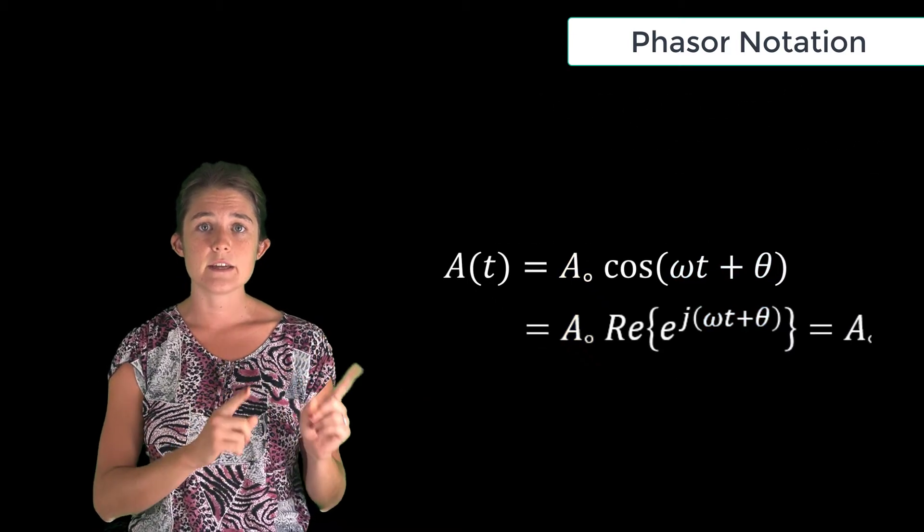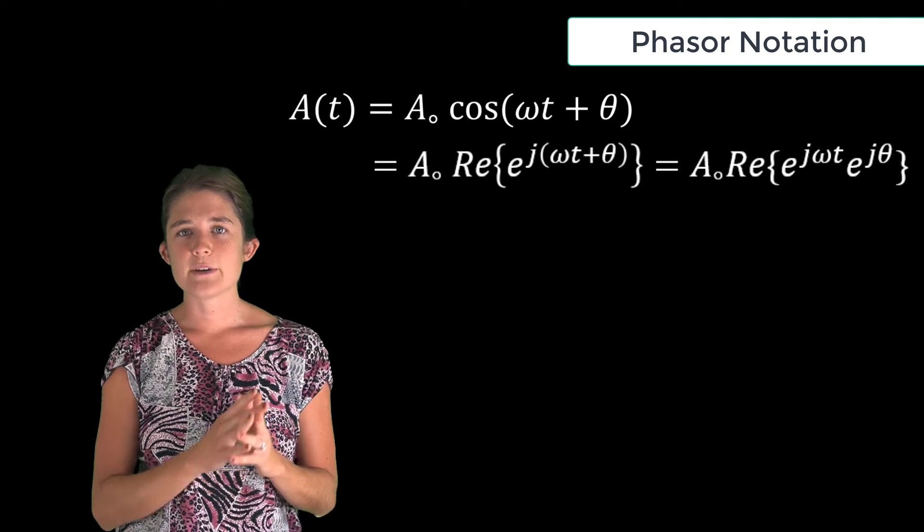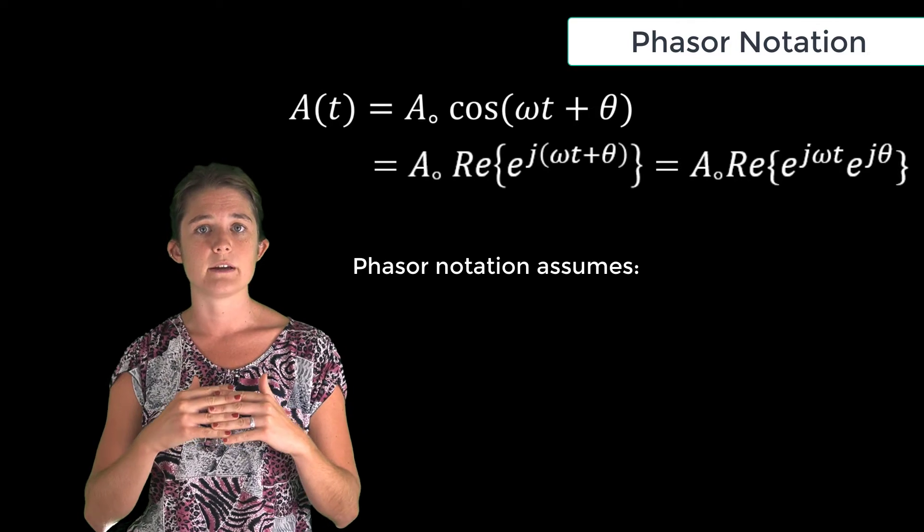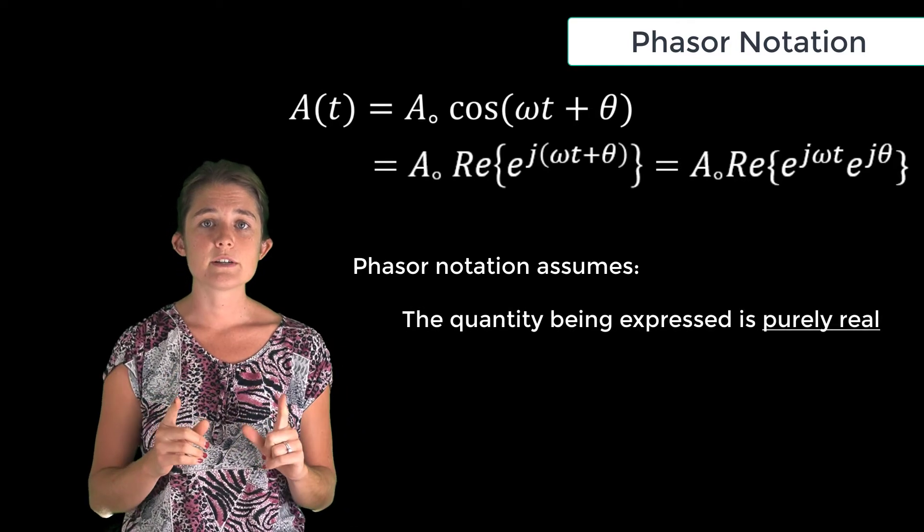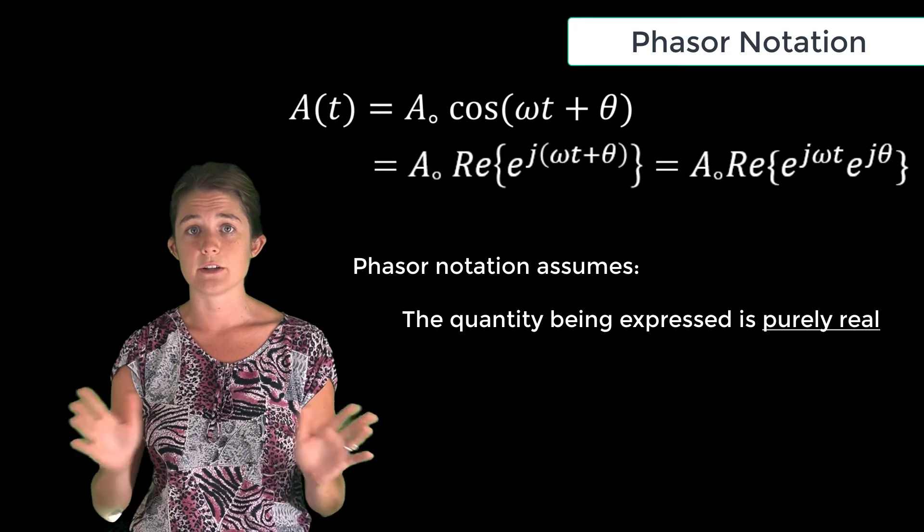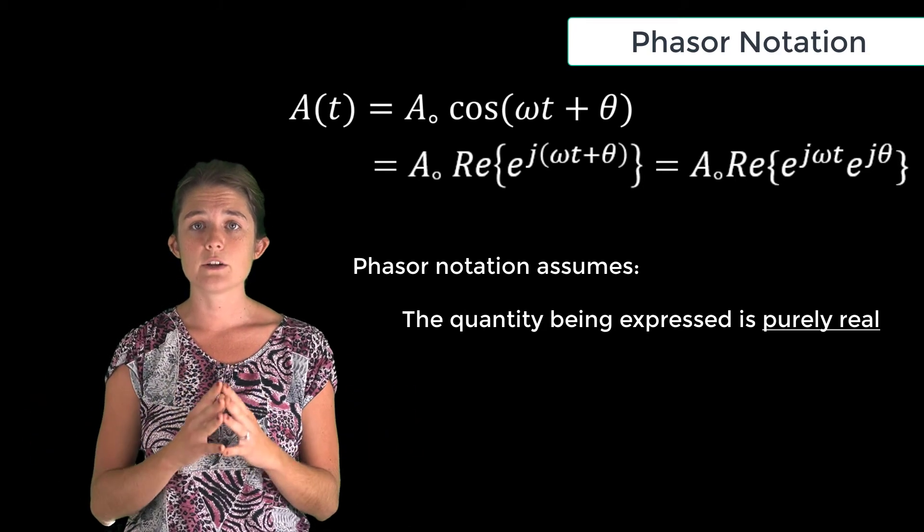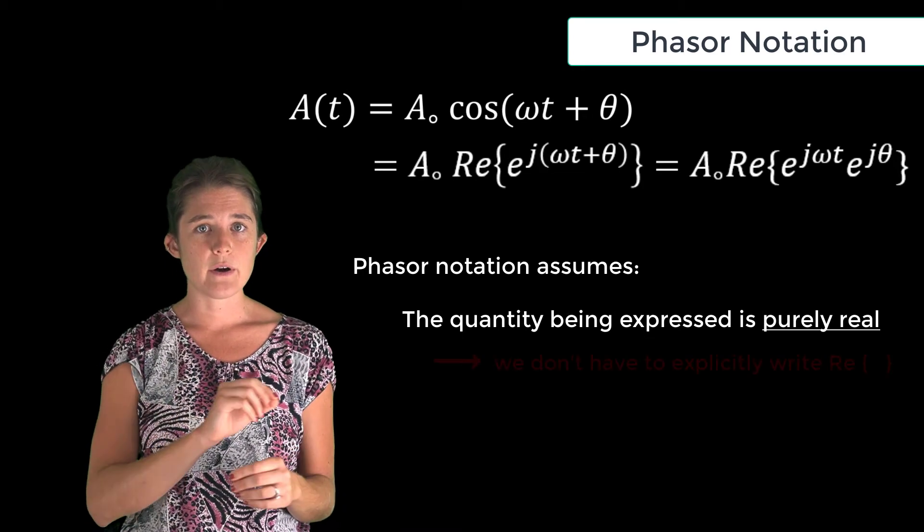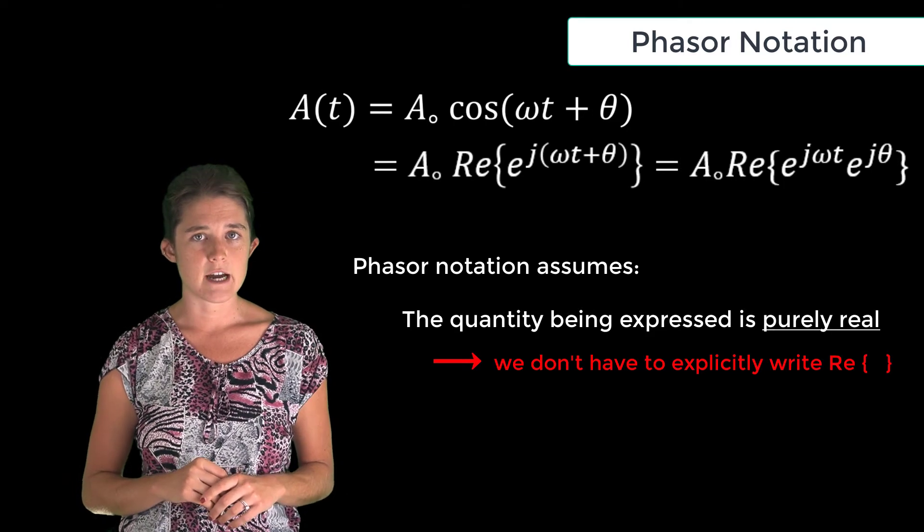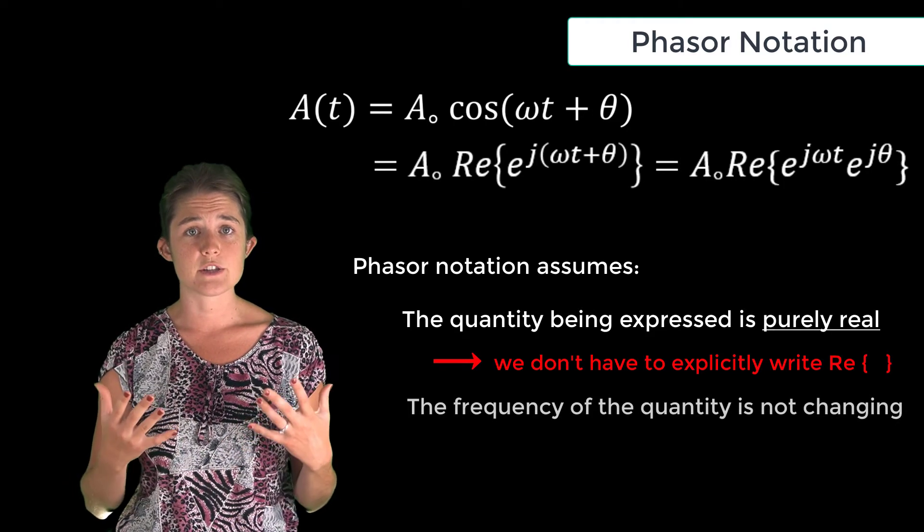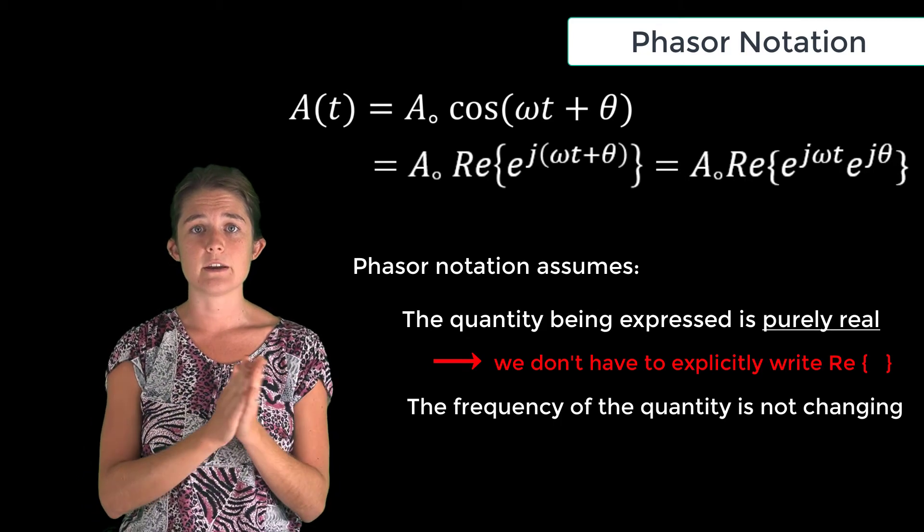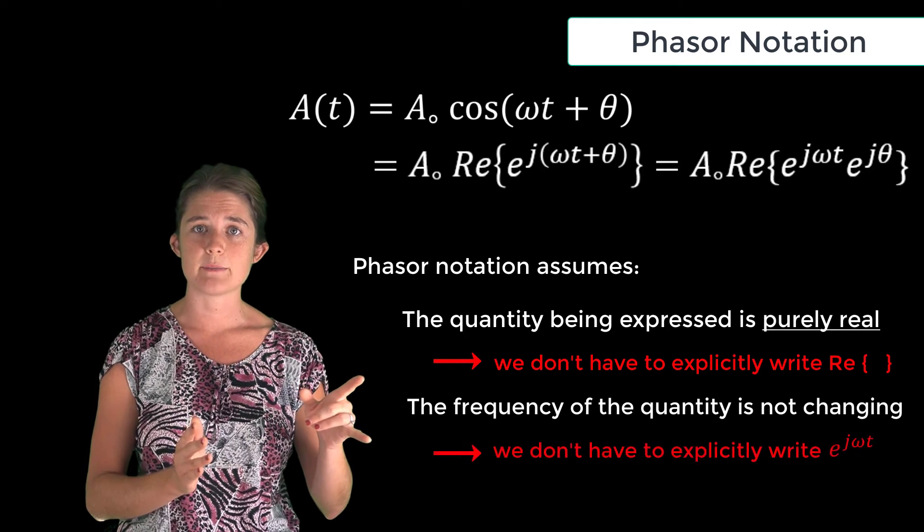Now phasor notation uses this complex notation but makes two notationally simplifying assumptions. The first is that whatever we're expressing using phasor notation, whether it's voltage or electric field or whatever it is, is a real quantity. Since we know it's real, we don't have to write this every time. The second assumption is that we're dealing with a linear time-invariant system. In other words, the frequency isn't changing. The only things that change in an LTI system are amplitude and phase, so we can break off the frequency part of this term and leave it as an implicit factor rather than explicitly writing it out.